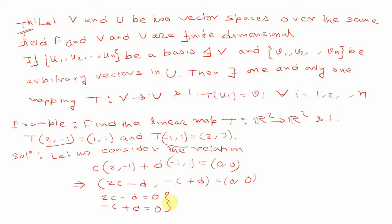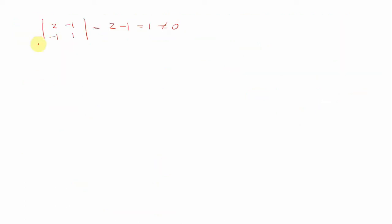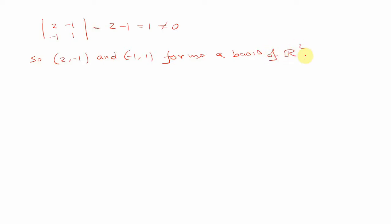Therefore this system of equations only has the zero solution, so the two vectors (2, -1) and (-1, 1) are linearly independent. Since the dimension of R² is 2, and we have 2 linearly independent vectors in R², they form a basis. Therefore {(2, -1), (-1, 1)} is a basis of R².